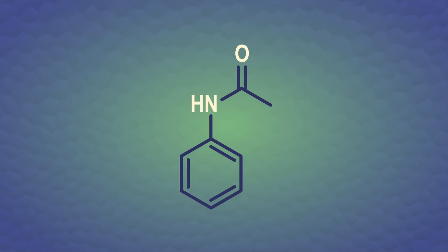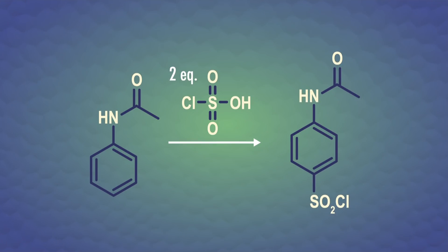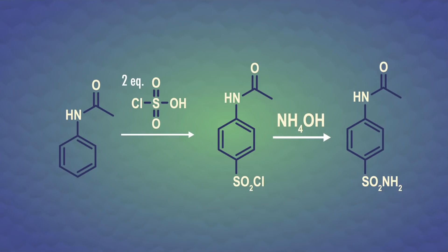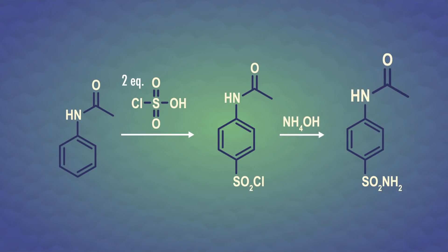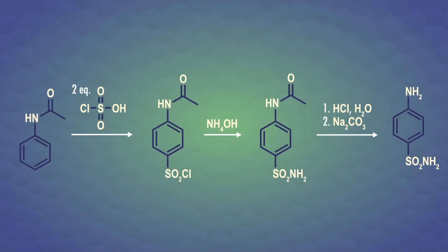Now that we've purified our crystalline solid acetanilide, we can finish off our synthesis of the antibiotic sulfanilamide. Our EAS reaction is a modified sulfonation called chlorosulfonation, which adds an SO2Cl group instead of the SO3H group from plain sulfonation. The chloride leaving group is turned into an amine using ammonium hydroxide and a substitution reaction. Since the bulky blocking group used to direct new groups to the para position is an amide, it can be removed in the last step through an acid-catalyzed hydrolysis reaction and then neutralized with base.